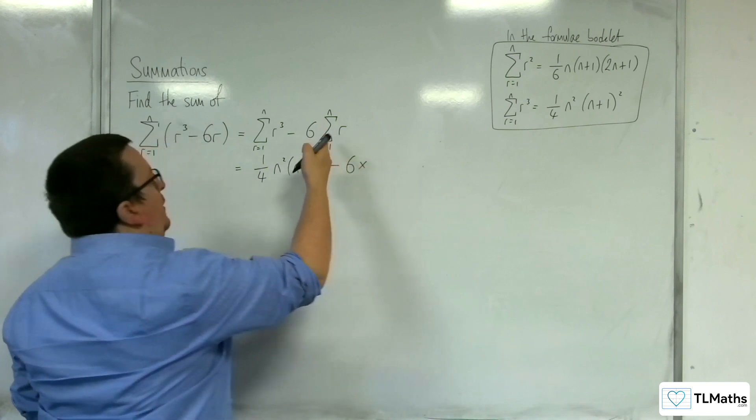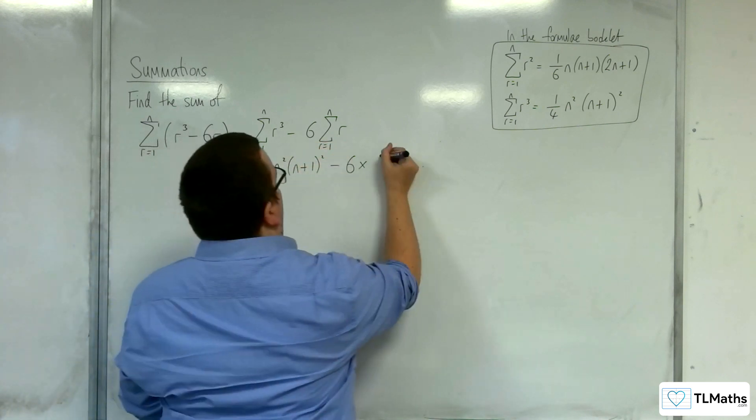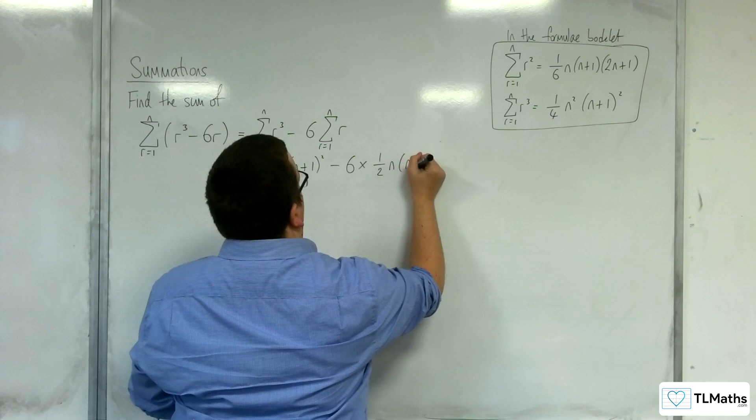Then we've got take away 6 lots of this one, which we're not given, so we need to recall that that is 1 half n n plus 1.